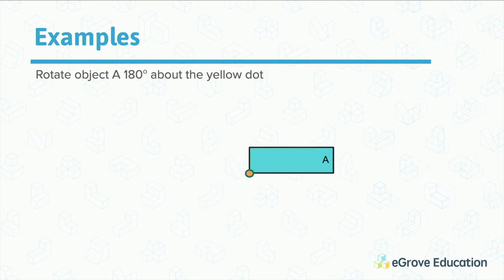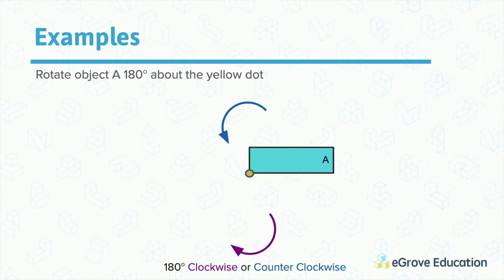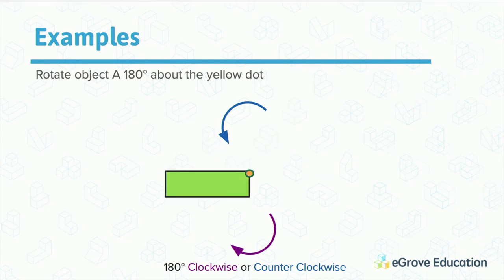Here we're rotating an object 180 degrees, which is counterclockwise because it's positive, about the yellow dot. What's interesting about 180 degrees is you can go in either direction and still get the same answer. Whether we go 180 degrees counterclockwise or clockwise, our final resting point is the same.